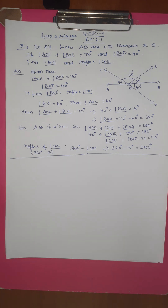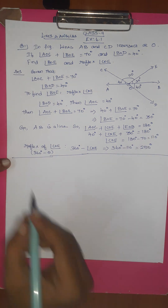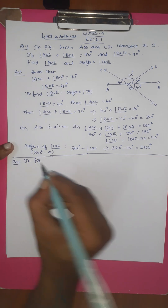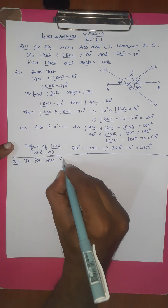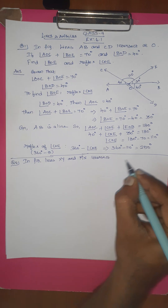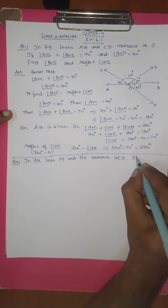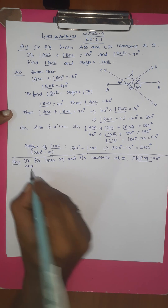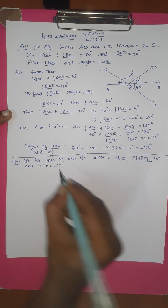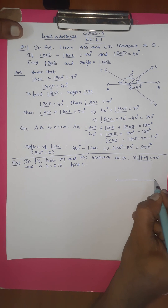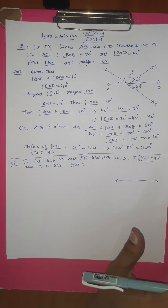Right, you get it? It's easy. Question number 2 — in the given figure, lines XY and MN intersect at O. If angle POY equals 90 degrees and A is to B equals 2 is to 3, find C. You can draw a diagram from the book to understand.